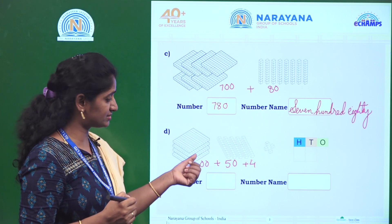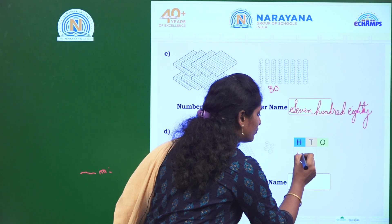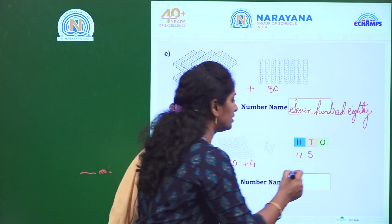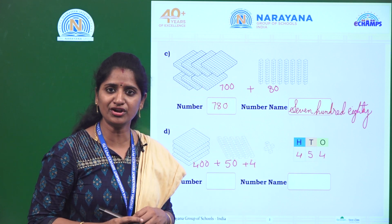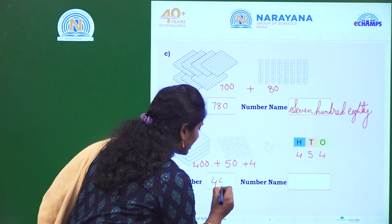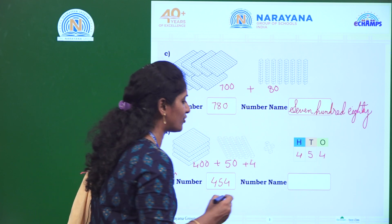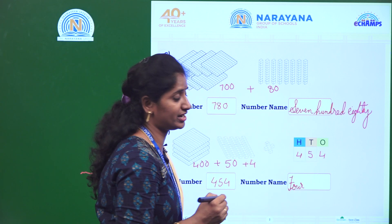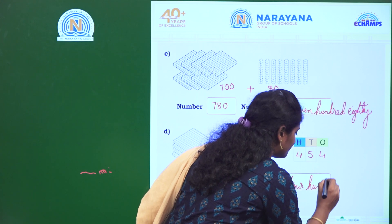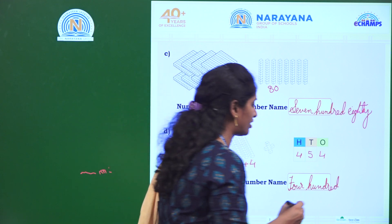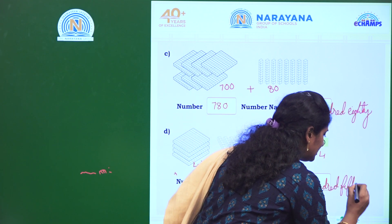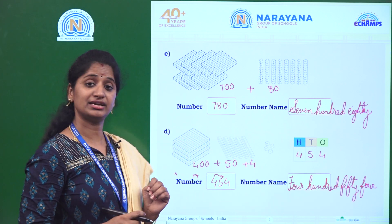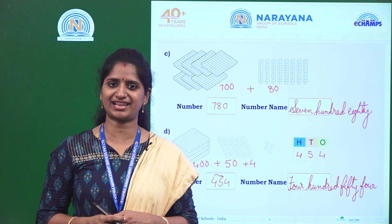In the hundreds place, how many bricks? 4. That means 4 in hundreds place. In tens, how many tens? 5 tens, so 5 in tens place. And in ones place, which number? 4 in ones place. So, what is the number? 454. Write here number 454. The number name of 454: F-O-U-R four, H-U-N-D-R-E-D hundred, F-I-F-T-Y fifty, F-O-U-R four. 454. Is it clear children? I hope you all enjoyed today's class. Thank you all children. Have a good day.